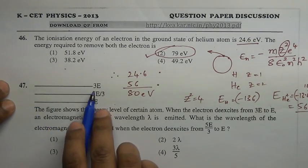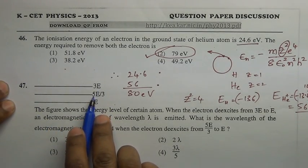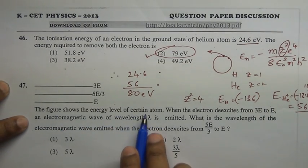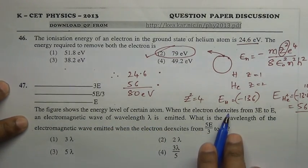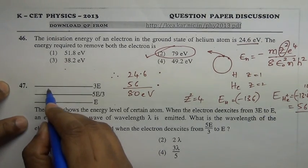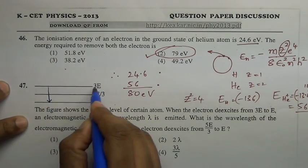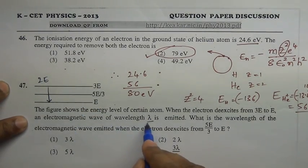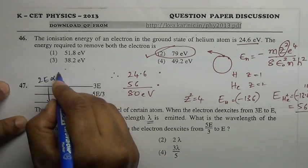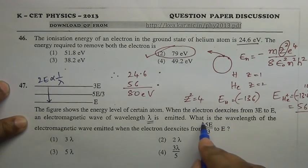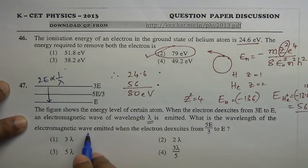Question 47: The figure shows energy levels of a certain atom at 3E and 5E/3 and E. When the electron de-excites from 3E to E, the difference is 2E, and the corresponding wavelength is lambda. So 2E is proportional to 1/lambda.